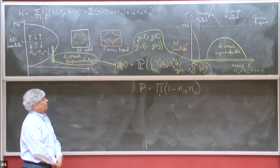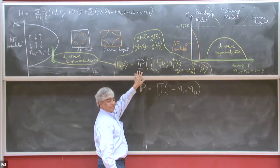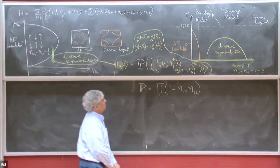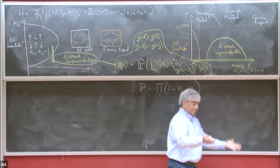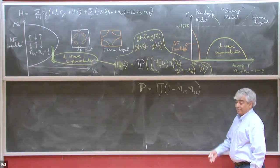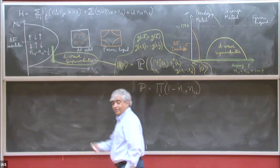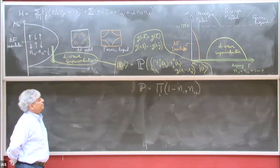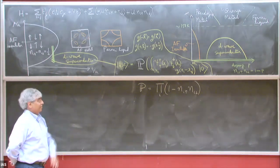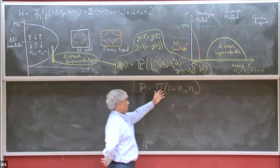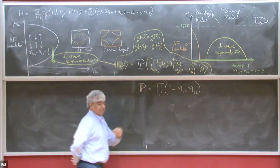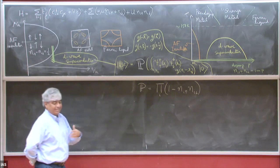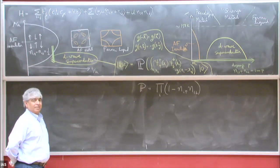Today we know that distinction is not true, and developments we're going to cover will make that obviously clear, although it became clear within a few years even then. Roughly speaking, this kind of constraint of projecting out sectors of Hilbert space is very naturally handled using a gauge theory, so there's an emergent gauge field we'll talk about starting today.